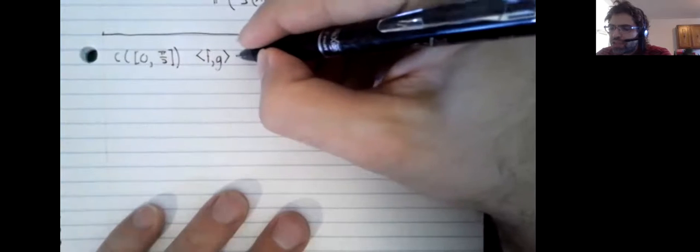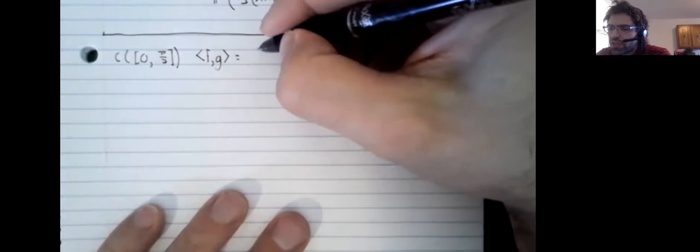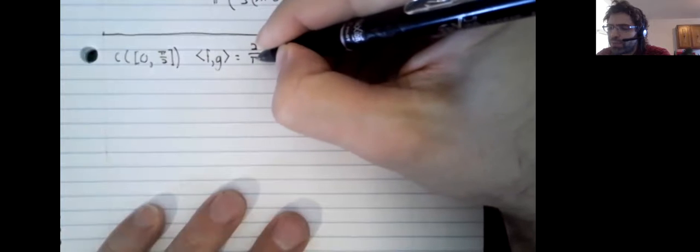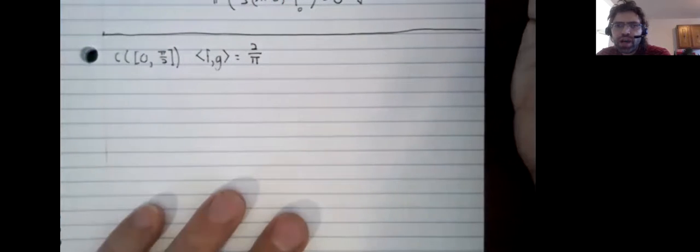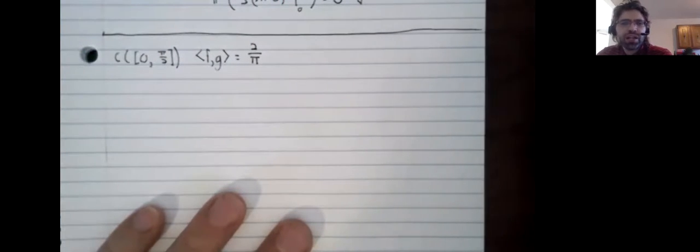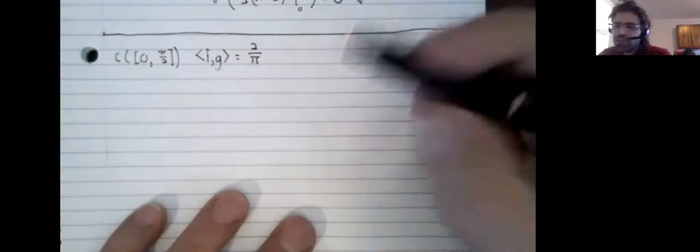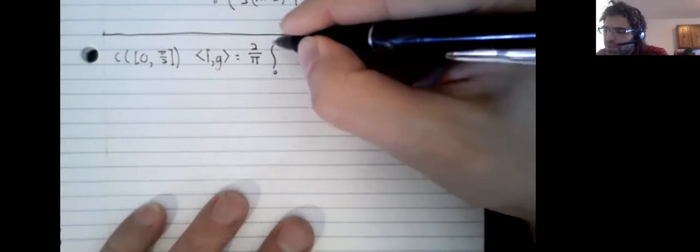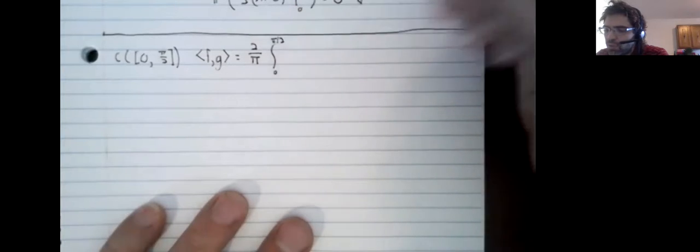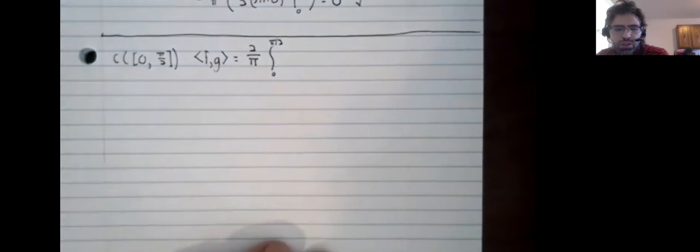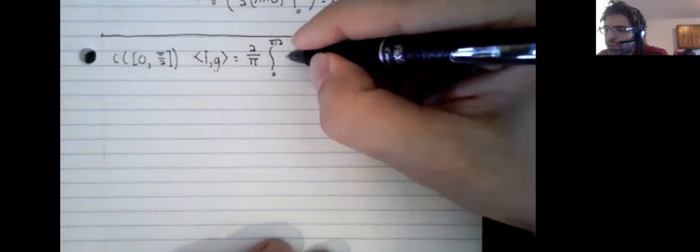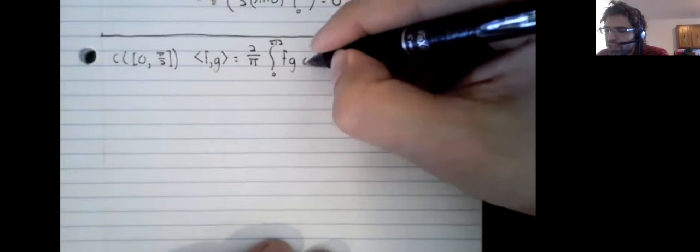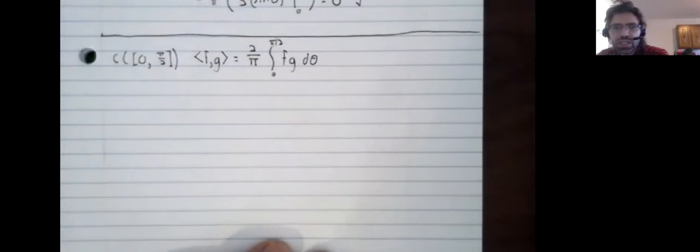And that changes our inner product as well. Two divided by pi times the integral from zero to pi over two of f g d theta.